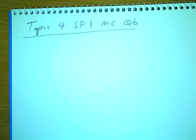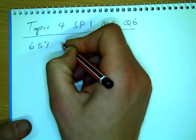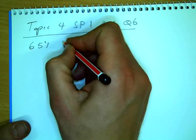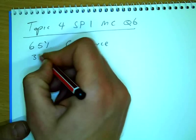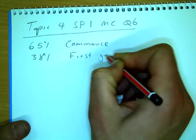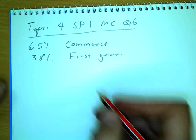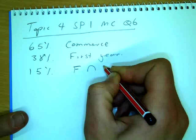So you're given the introduction and we want to turn that introduction into eventually a Karnaugh map. Now the important thing from the introduction was that we had 65% of students were studying commerce and 38% of students were in the first year. And we're also told that 15% were in the first year and studying commerce.